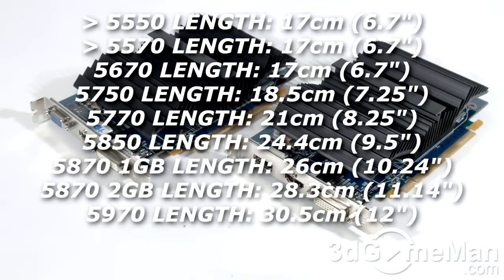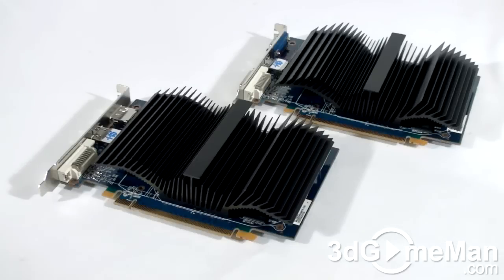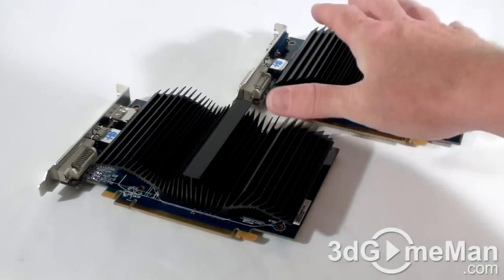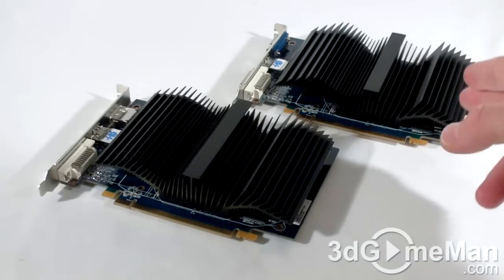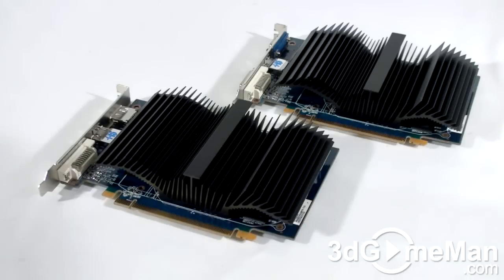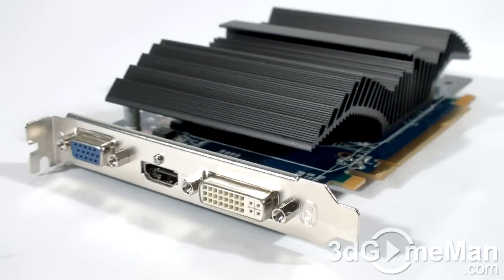Both of these video cards have a PCI Express interface of 2.1 and are based on the Redwood core, which is built on the 40 nanometer manufacturing process and has 627 million transistors. They both have passive cooling, meaning they only include a heatsink and not a fan.